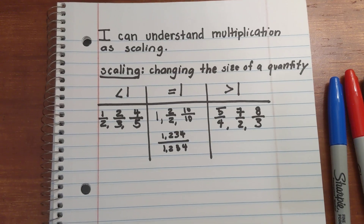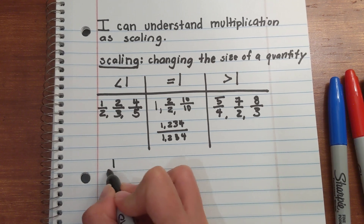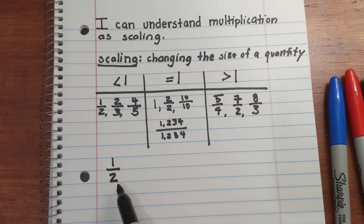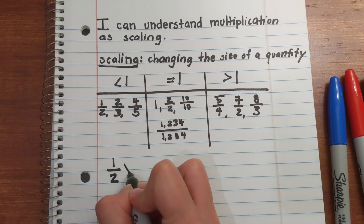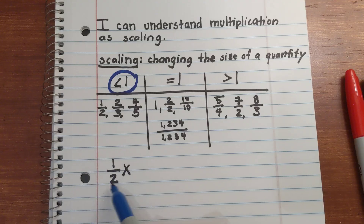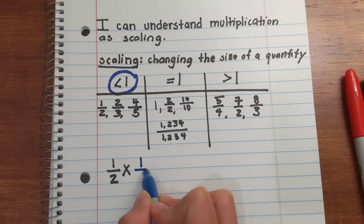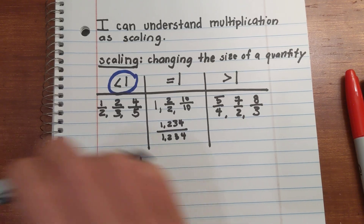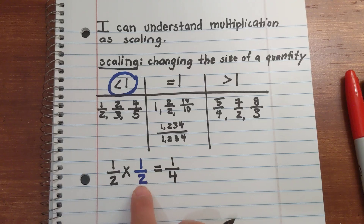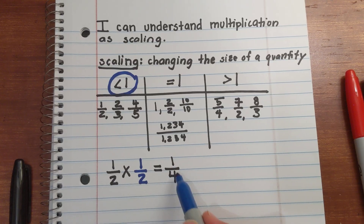Now, the reason we wrote these down is to look at what happens when we multiply a factor. Let's use the fraction one half. If I want to decrease the size — shrink it — I need to multiply by a factor that's less than a whole. If you multiply by a factor less than a whole, your answer is going to be less than the original factor. So: one half times one half equals one fourth, and one fourth is less than one half. One half is less than a whole, therefore it shrunk the fraction.